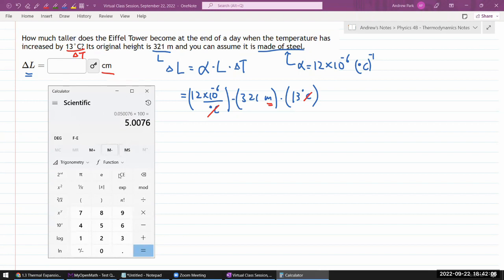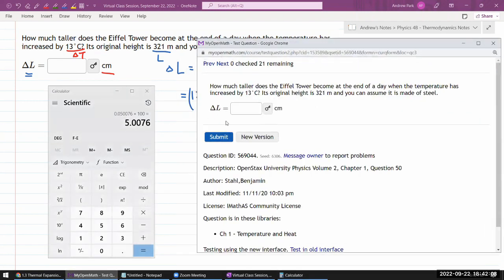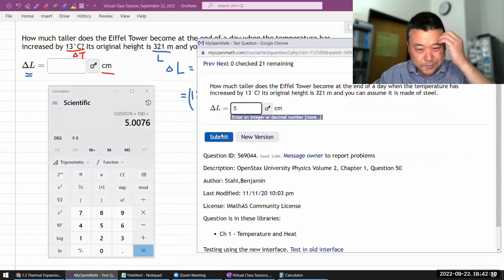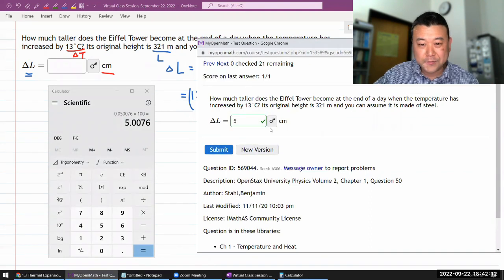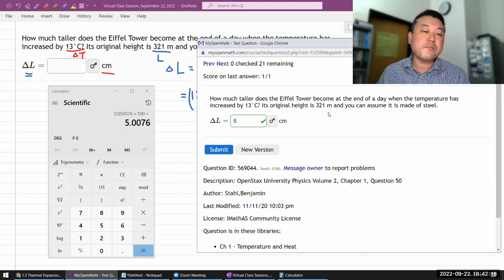Oh, I suspect that's how the question was generated. The question generator probably started with 5 centimeters first and then worked backward to this. So that's thermal expansion.